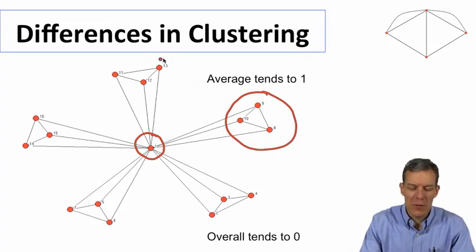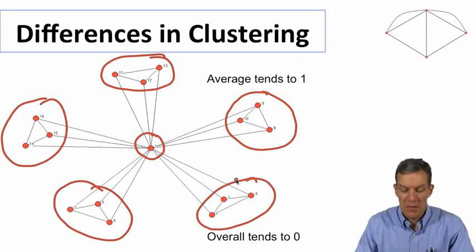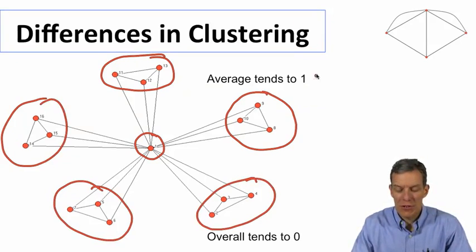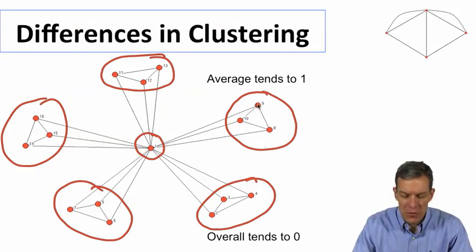but aren't friends across these different groups of three. So we keep looking at these different groups of three. And what do we find? In terms of average clustering, this is going to tend to one. So for instance,